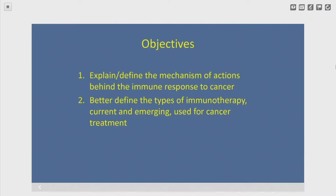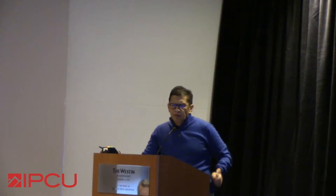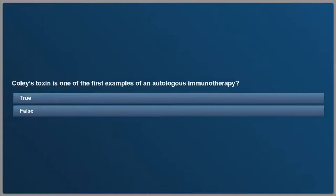The objectives of this talk are to explain and define the mechanism of action behind the immune response to cancer. We're going to talk about some basics of what the immune system does, and better define the types of immunotherapy, current and emerging, used for cancer treatment.